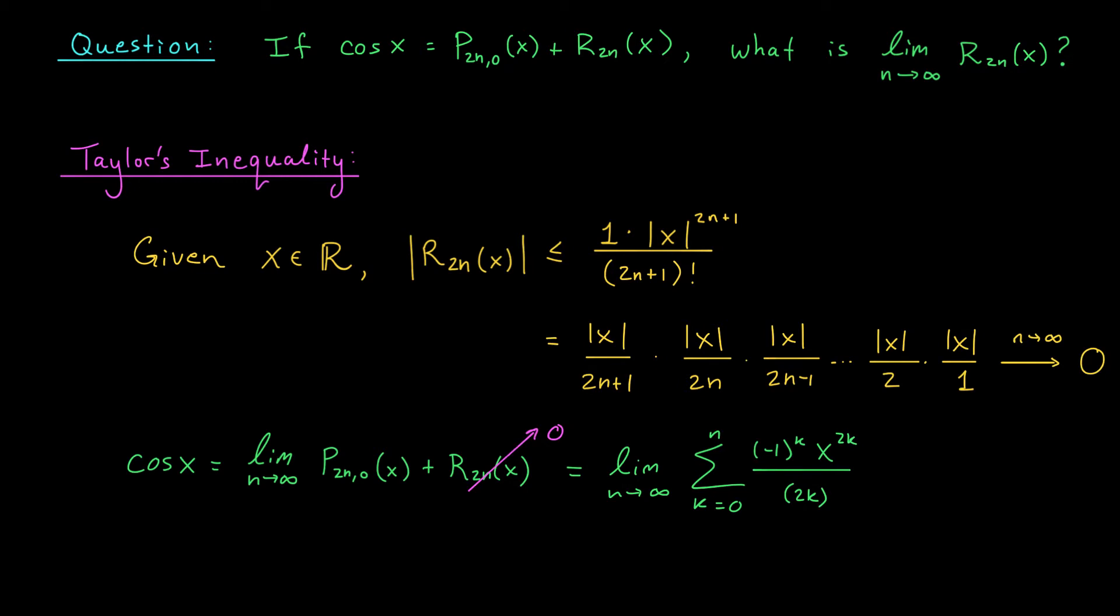Well, now this is pretty incredible. No matter what x value you give me, cosine of x can be thought of as this limit of sums, where we're adding more and more terms to the sum every time. In particular, when n goes off to infinity, we can sort of think of this like a sum of infinitely many terms. And maybe it makes sense to write it a bit more compactly, as the sum from k equals 0 to infinity of (-1)^k x^(2k) over (2k)!. And there you have it, folks.